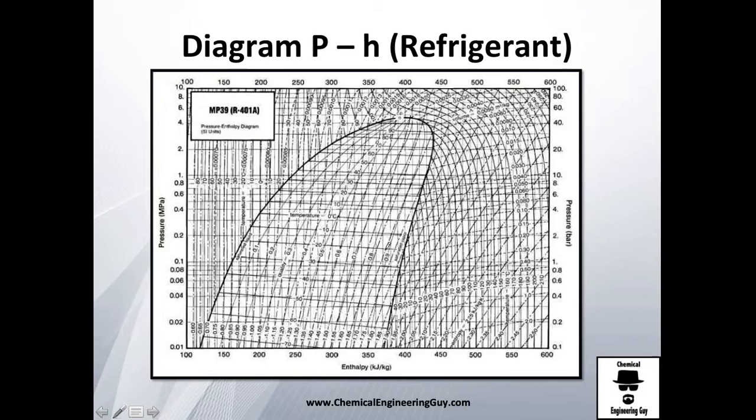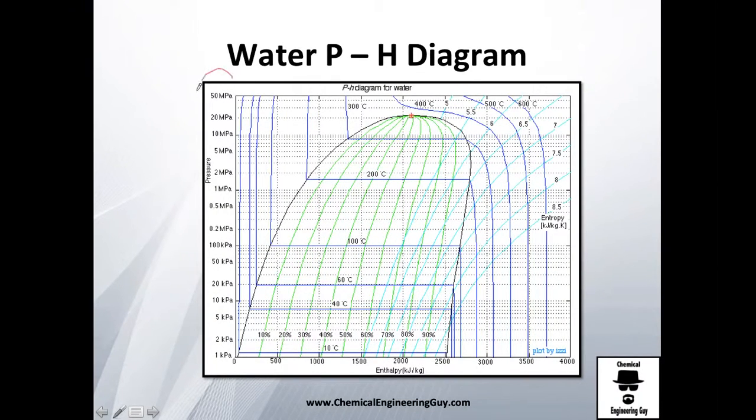Let's look at an actual diagram. R refers to refrigerant 401A—that's its specific name. You can see this line, the saturated line. This is liquid, this is gas, this is liquid plus vapor, and this is the critical point, which is marked. You have temperatures marked at 0, 10, 20, 30 Celsius. I'll explain how to read this later, but this is very useful. You have pressures and enthalpies.